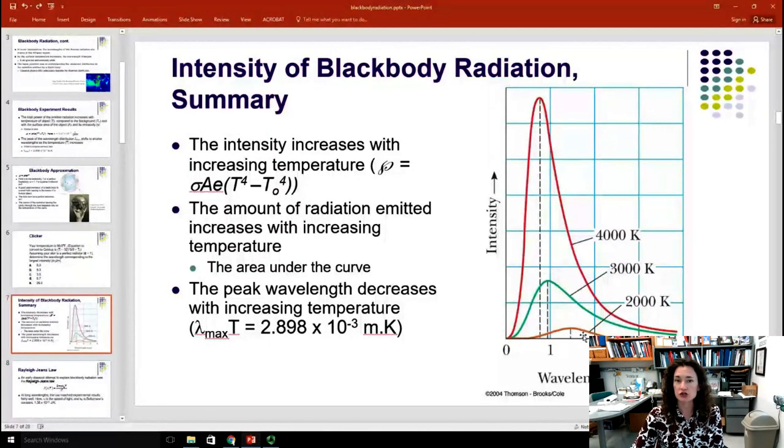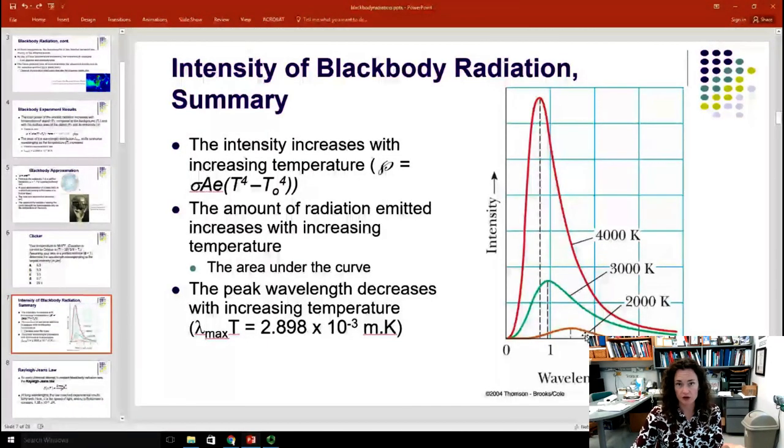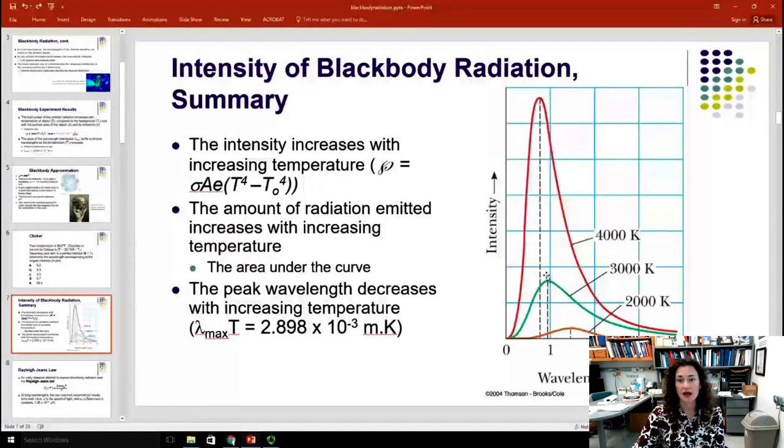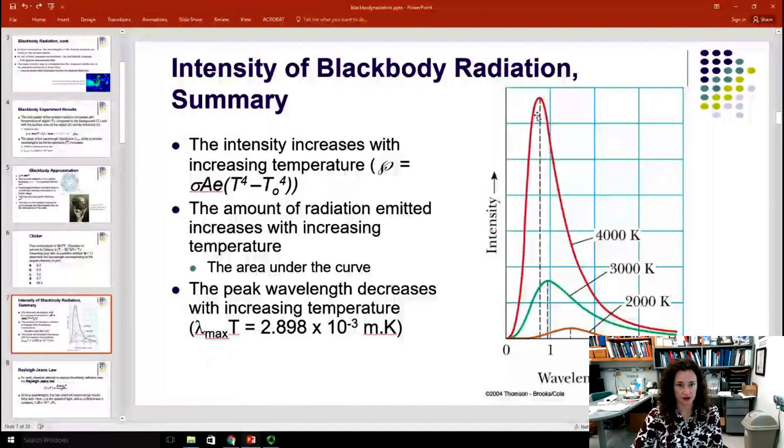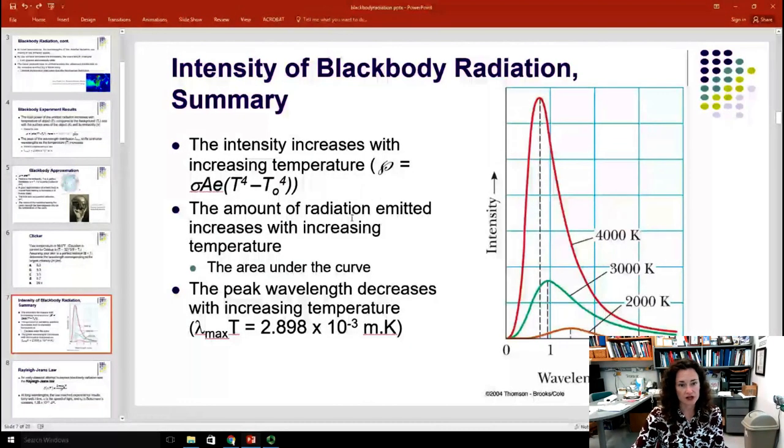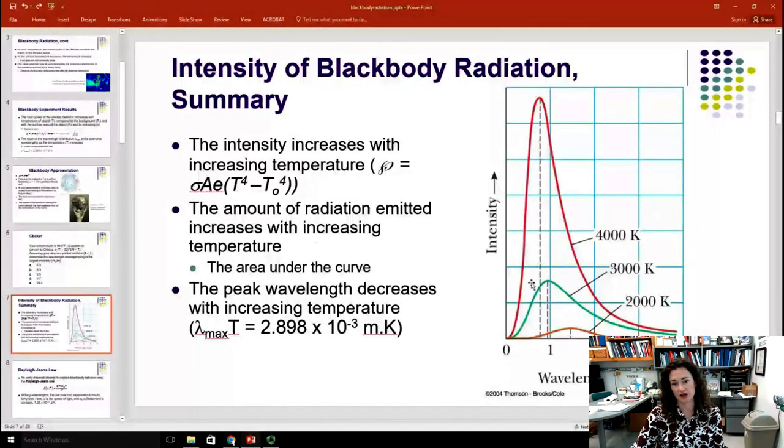And that's seen here, this orange curve, which is kind of low intensity, is 2,000 Kelvin. The green is higher at 3,000 Kelvin. And then the red is the highest on this plot at 4,000 Kelvin. So the amount of radiation emitted increases with increasing temperature. And that would be the area under this curve.